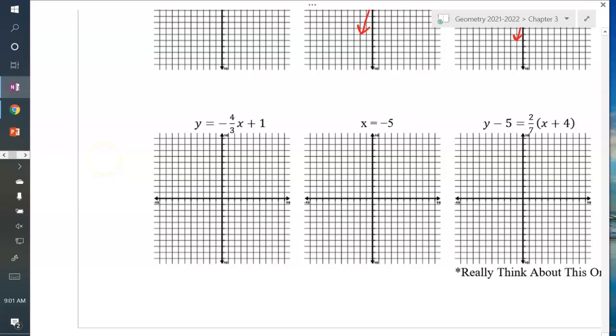Okay, next one. Try graphing this one on your own. So pause the video. Graph y equals negative 4 thirds x plus 1. And then see how you did. Pause the video now. So did you get a line that looks like this? Start at your y-intercept, which is 1. Count down 4 boxes. And then over 3, there's your second point. And you can draw your line.